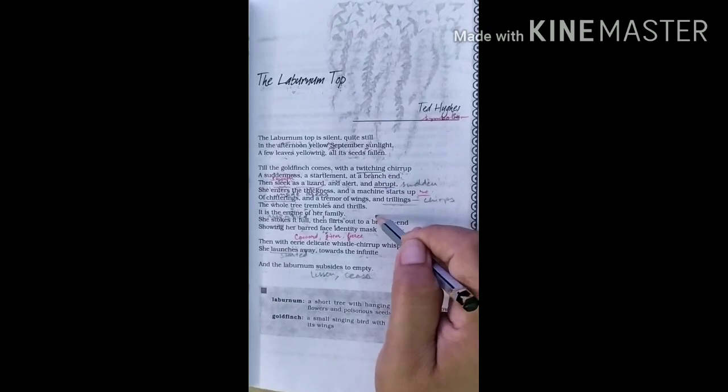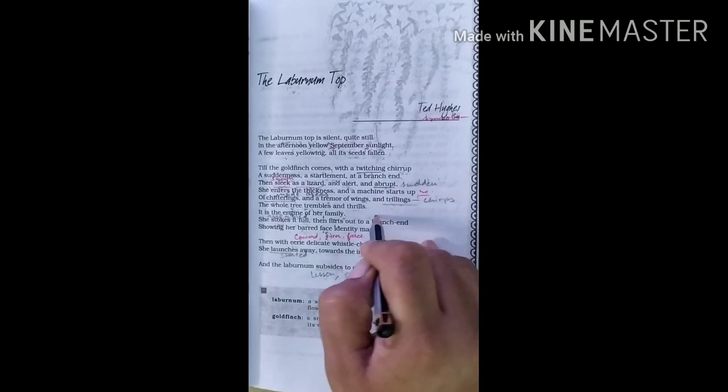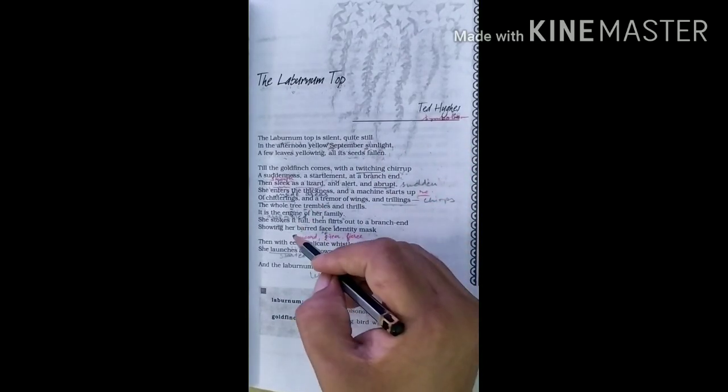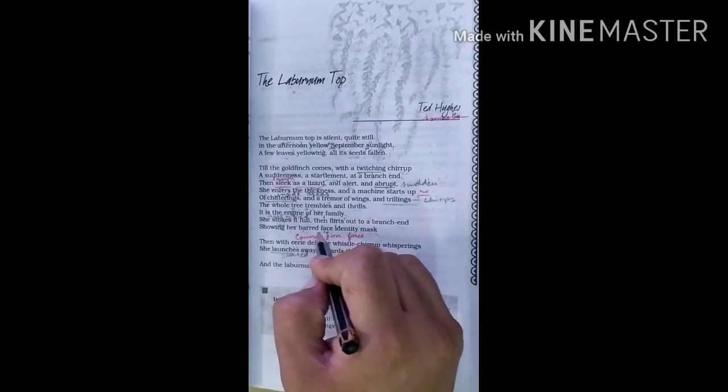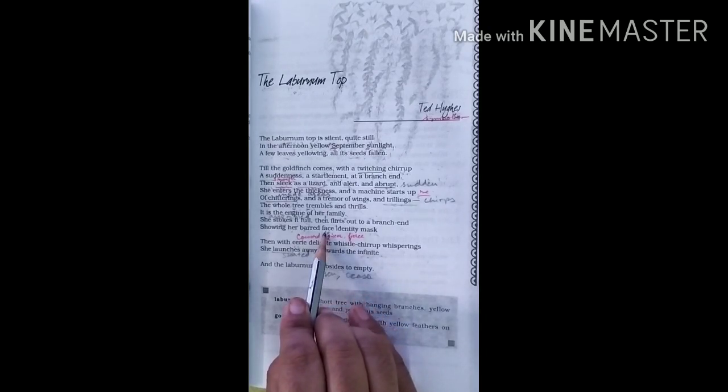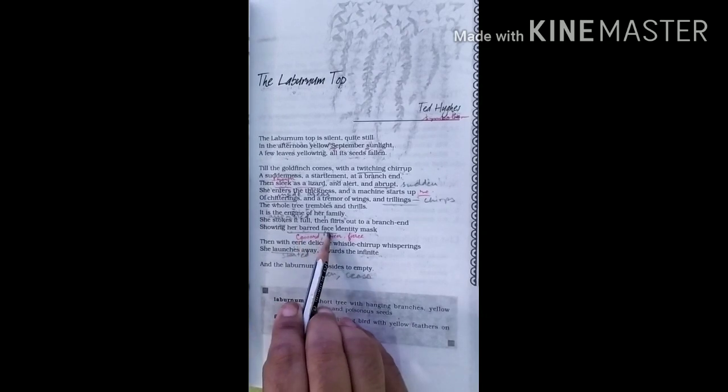Then one more literary device is used here. That is transferred epithet. Transferred epithet is used where the adverb is transferred to another noun. Here, her barred face. It becomes that the bird's face becomes her identity and the symbol of recognition. So here which literary device is used? Transferred epithet.